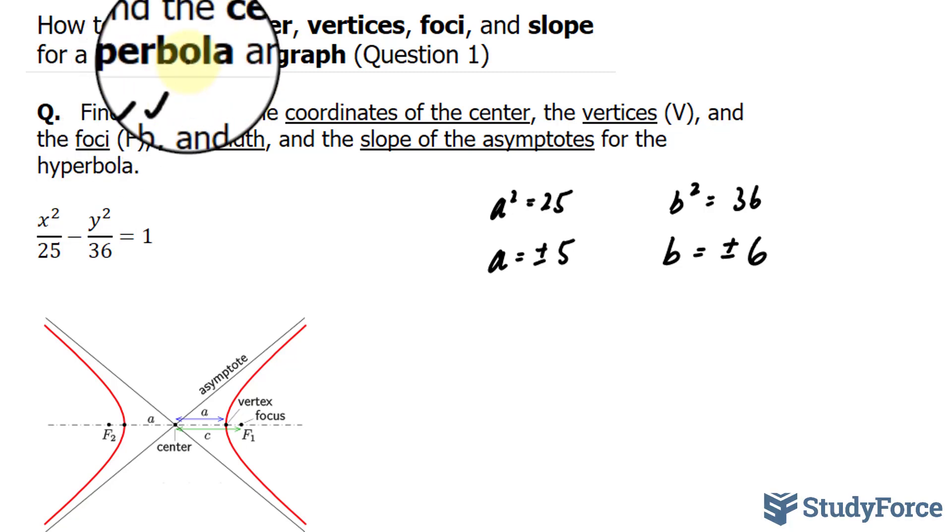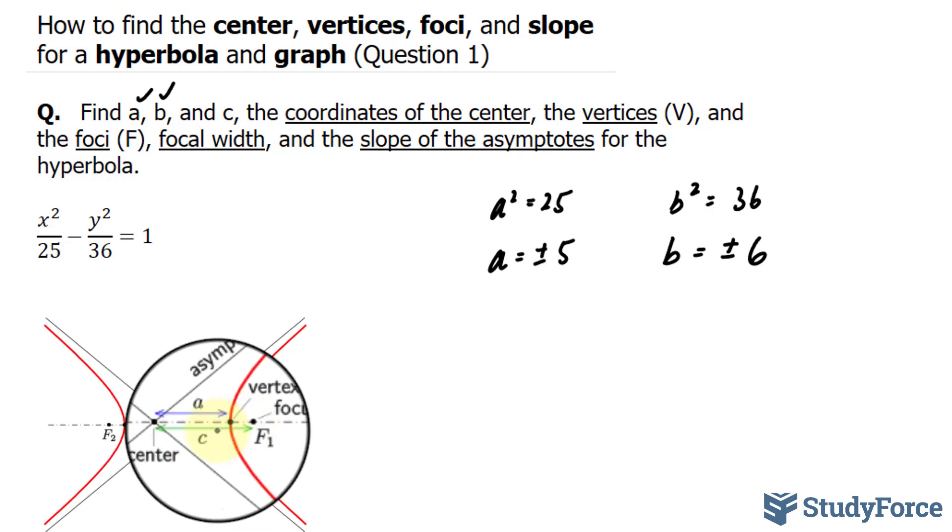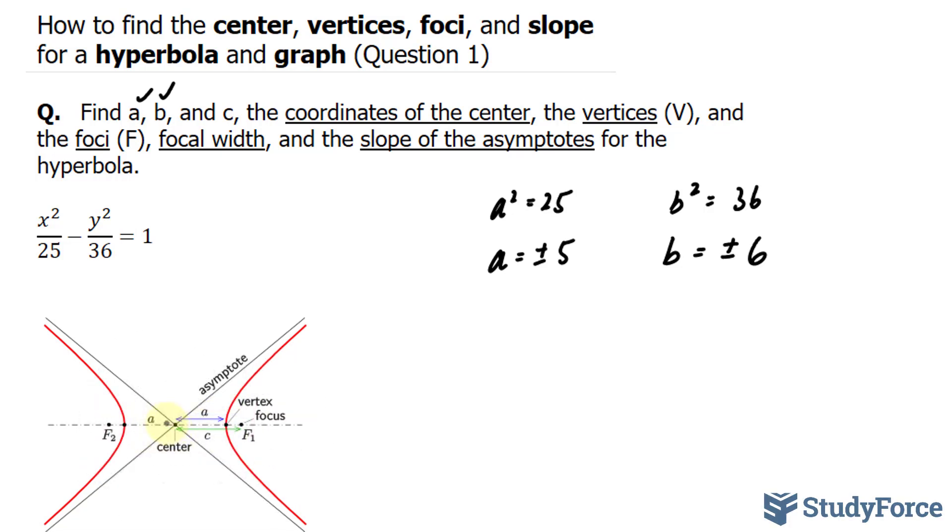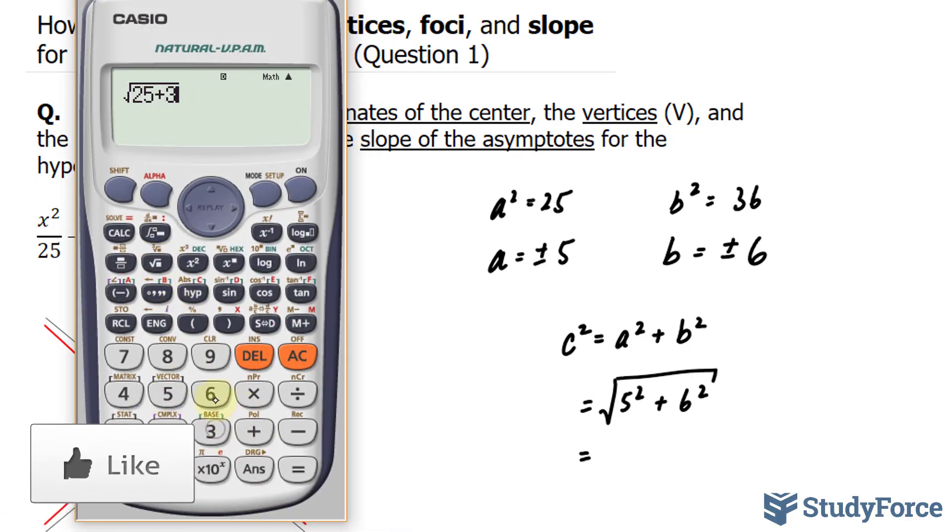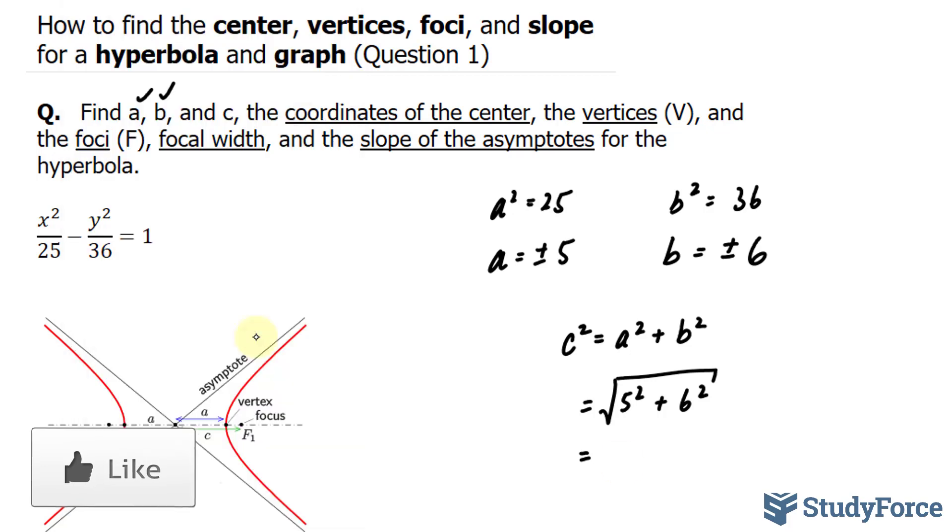We can also find our c. And c represents the distance from the center all the way to the focus. And it's going to be a plus minus number. The way we find our c is we use the formula c squared is equal to a squared plus b squared. Let's go ahead and fill this in. Then, 5 squared plus 6 squared, and we'll square root that. We end up with 25 plus 36, and the square root of 25 plus 36 is 7.8.